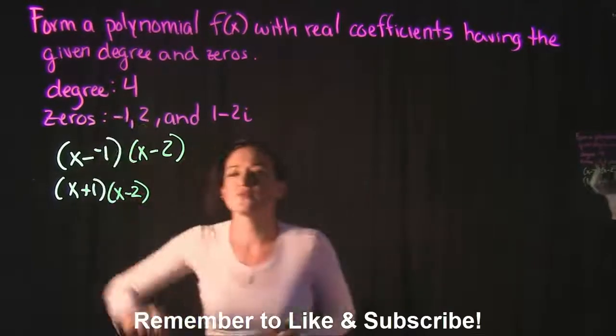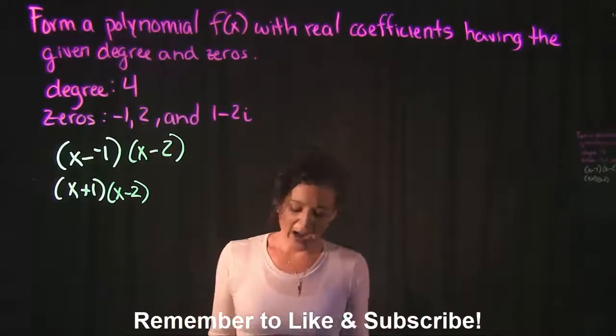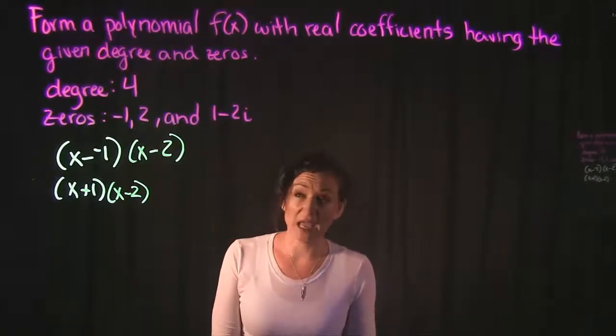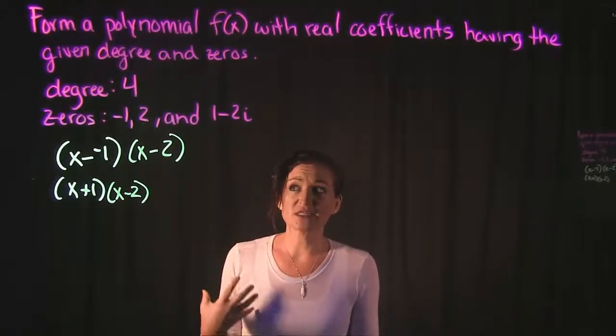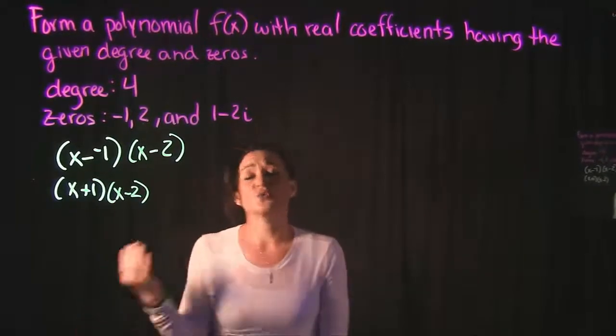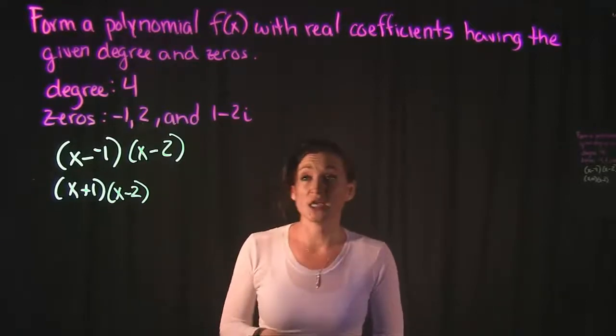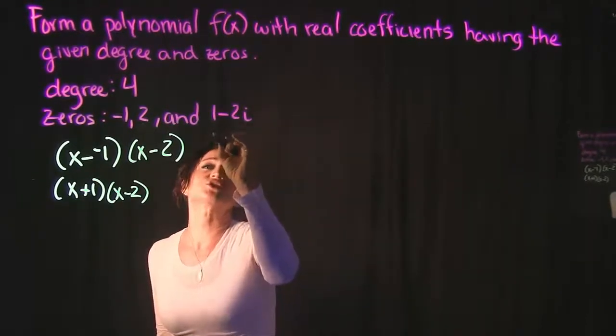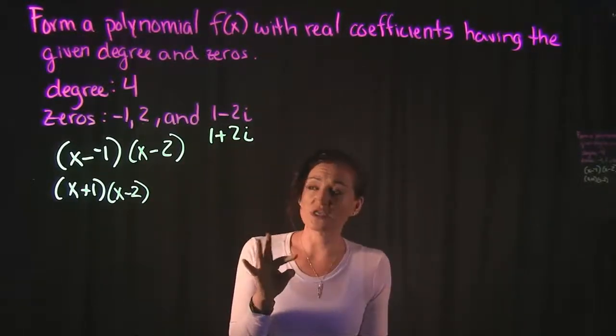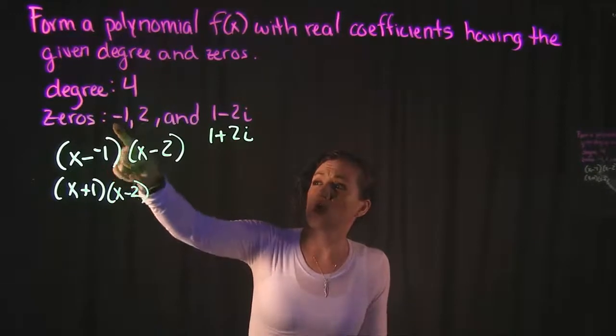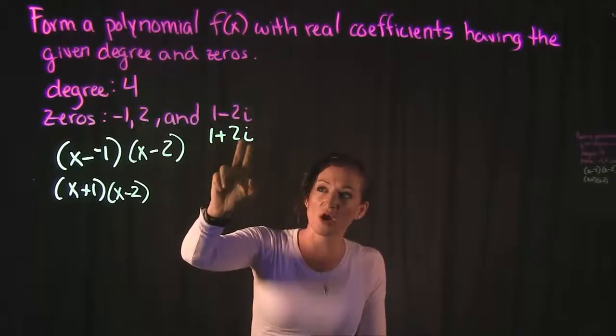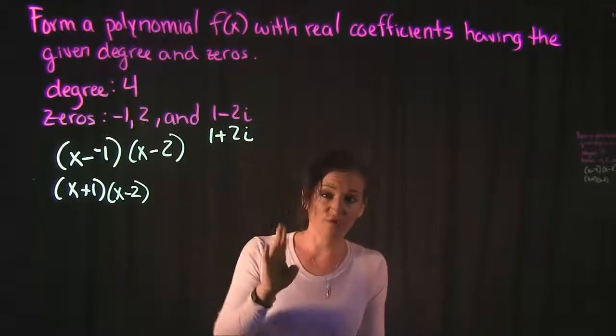But then they gave us the factor 1 minus 2i. This is a complex zero here that they gave us. When they give us a complex zero, we take our 1 minus 2i and we also need to take into consideration the conjugate of that. So the conjugate of 1 minus 2i is 1 plus 2i. This is where our fourth zero comes from: negative 1, 2, and 1 minus 2i are the first three, and then we take the conjugate of our complex one to get our fourth zero.